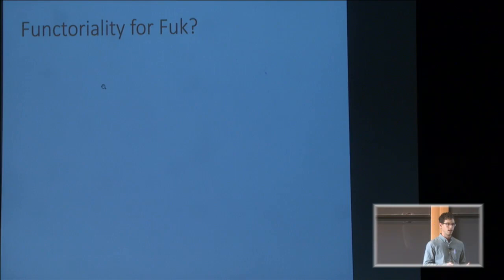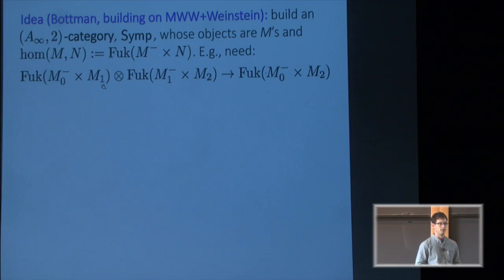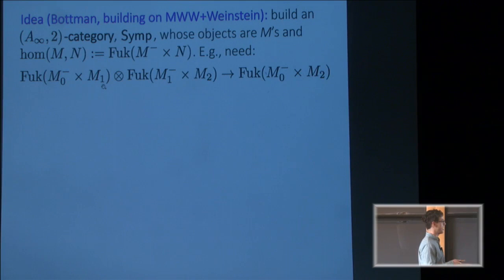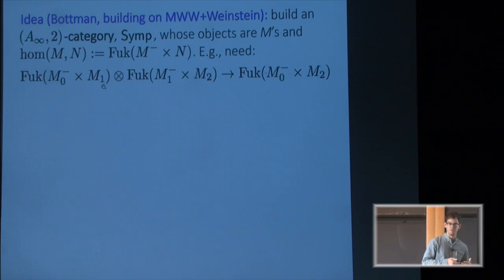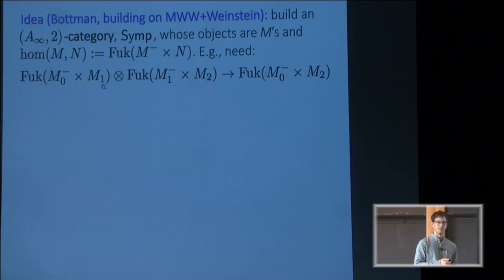Now, the thing I've been thinking about for a while is how to implement a notion of functoriality for the Fukaya category, which isn't baked into the definition. Unfortunately, I don't have time to really develop how this functoriality should work on the most basic level. But I'll tell you that building on ideas of Mau, Wehrheim, and Woodward, and Alan Weinstein, a couple of years ago, I suggested that functoriality should manifest as a way of binding together a large collection of Fukaya categories of different symplectic manifolds. So specifically, there's this idea of constructing some two-category-like thing called Simp, the symplectic A-infinity 2-category, where the objects are symplectic manifolds, and HOM from M to N is the Fukaya category of the product.